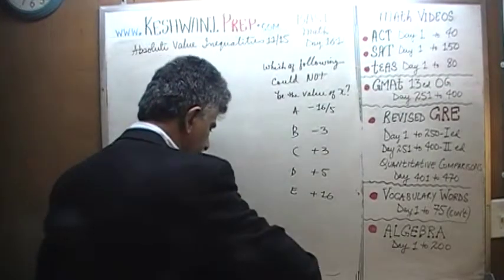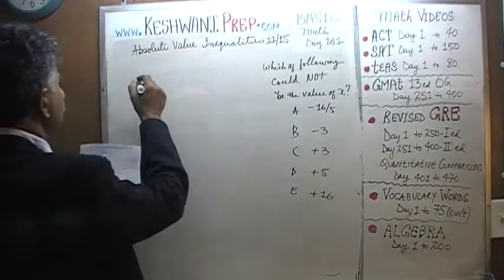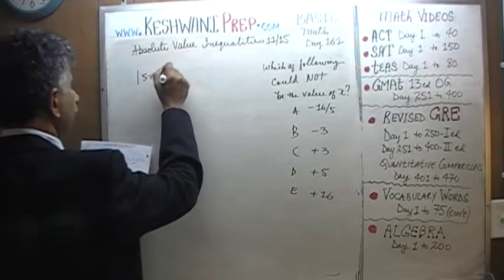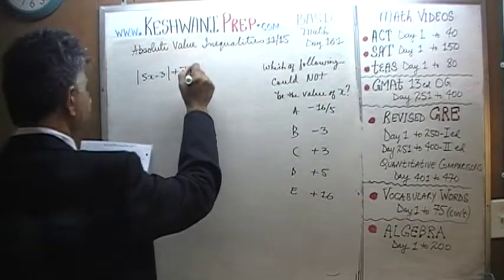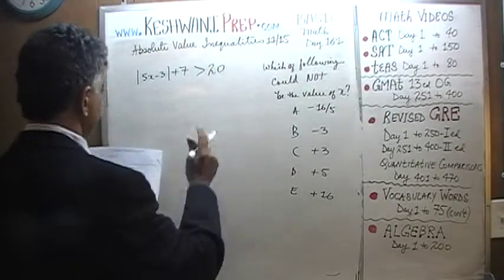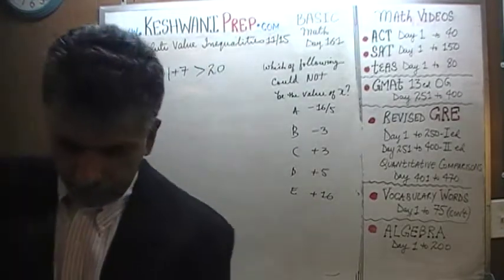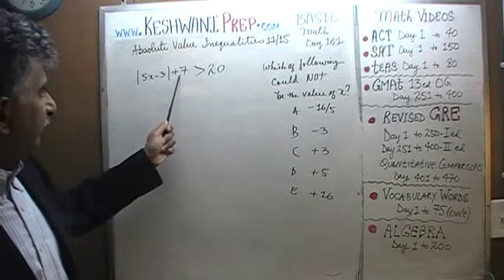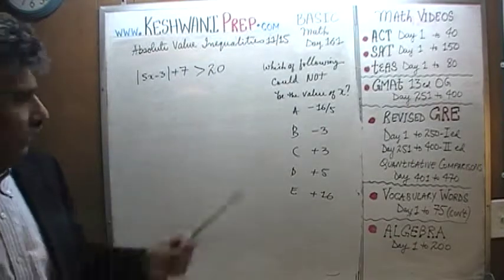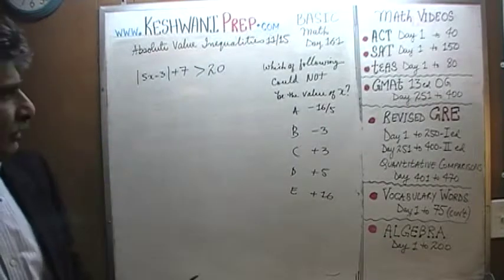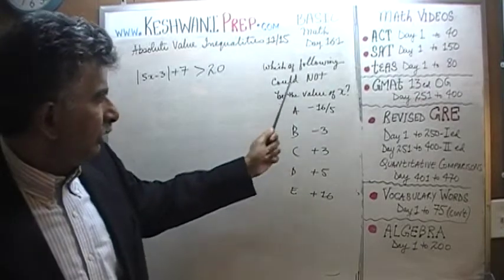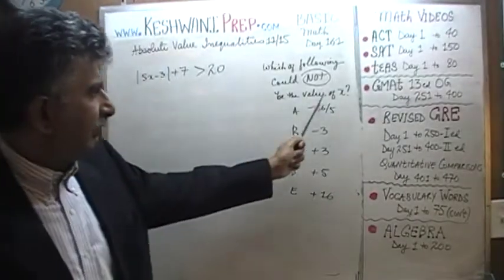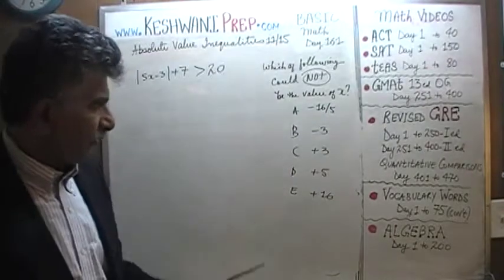Let's see what we have today. We are told that the absolute value of 5x minus 3, plus 7, is greater than 20. We are told that the absolute value of 5x minus 3 plus 7 is more than 20. Based on this inequality, the question is: which of the following could not be the value of x? And these are the 5 answer choices.